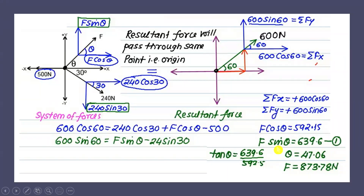Dividing the Y equation by the X equation: tan theta = 639.6 / 392.15, giving theta = 47.06 degrees. Substituting theta back into either equation gives F = 873.78 N. Therefore the unknown force has magnitude 873.78 N at a direction of 47.06 degrees — applying this force will produce a resultant of 600 N at 60 degrees.